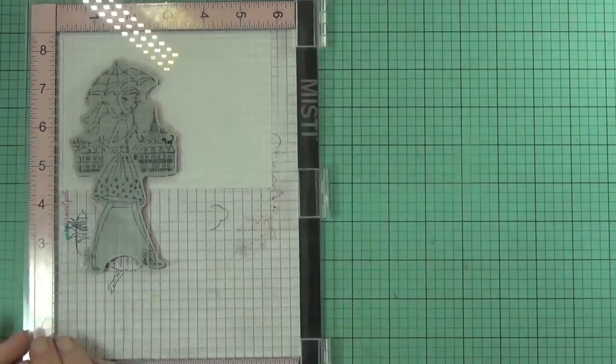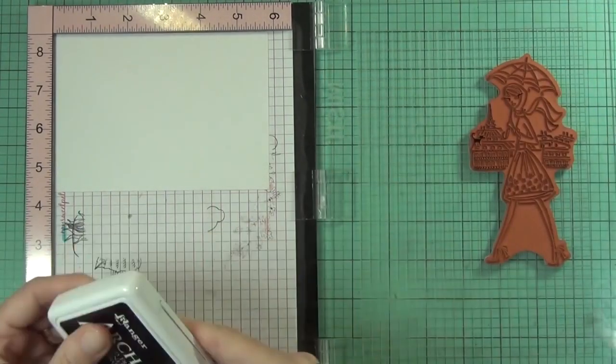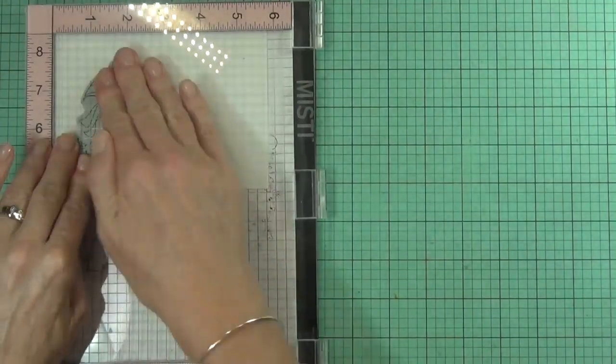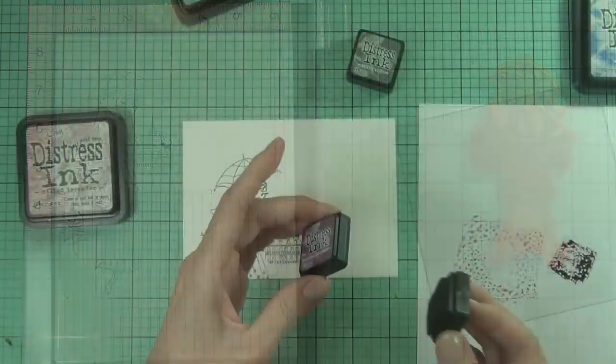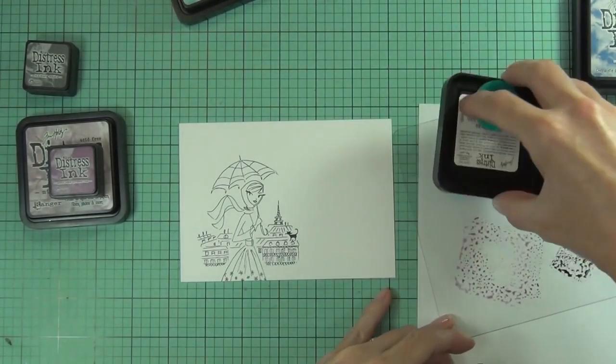I'm using some of the new Penny Black stamps from the Sweet Spring release. I'm starting with this gorgeous girl, a quite large stamp called Parisian Stroll.